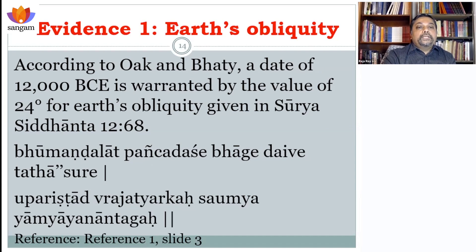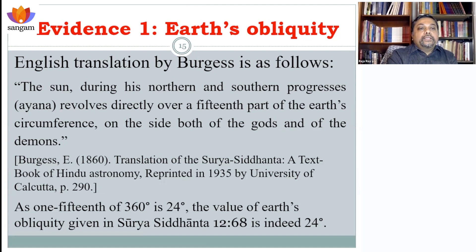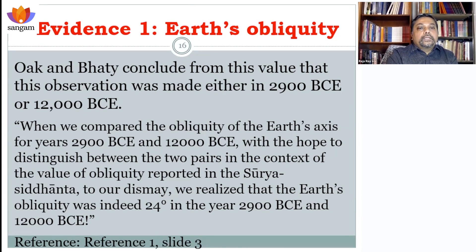The first claim is that Surya Siddhanta verse 12.68 gives the Earth's obliquity as 24 degrees. The translation by Burgess confirms that it is given in the text as 24 degrees. Oak and Bhatti then claim this value of 24 degrees was valid in either 2900 BCE or 12,000 BCE — two different dates when they say the Earth's obliquity was 24 degrees.